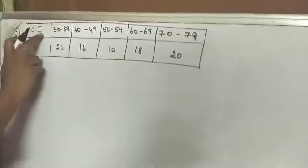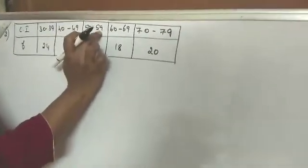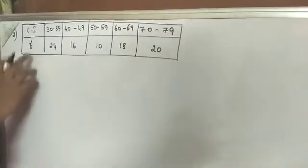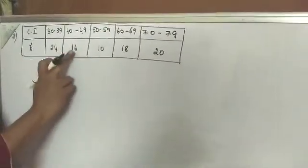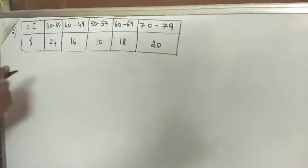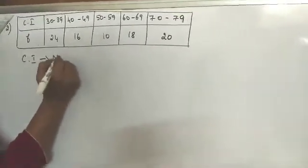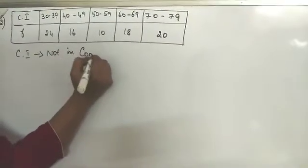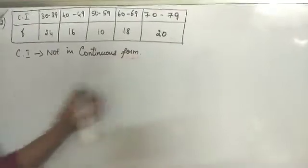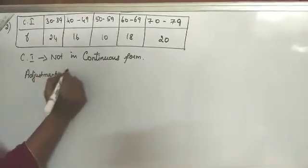Class interval 30 to 39, 40 to 49, 50 to 59, 60 to 69, 70 to 79. Frequencies 24, 16, 10, 18, 20. In this question, class interval is not in continuous form, so we have to take adjustment factor.